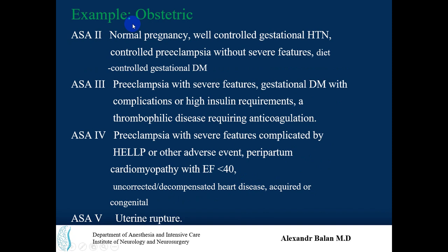For the obstetric population: ASA 1 is considered for normal uncomplicated pregnancy. ASA 2 includes well-controlled gestational hypertension, controlled preeclampsia without severe features, and diet-controlled gestational diabetes mellitus. ASA 3 is for pregnant women with preeclampsia with severe features.